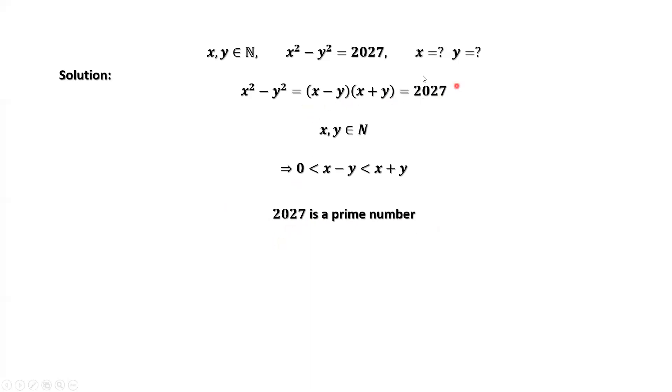From this equation, we imply the first part must be one. The second part must be 2027, because 2027 is a prime number.